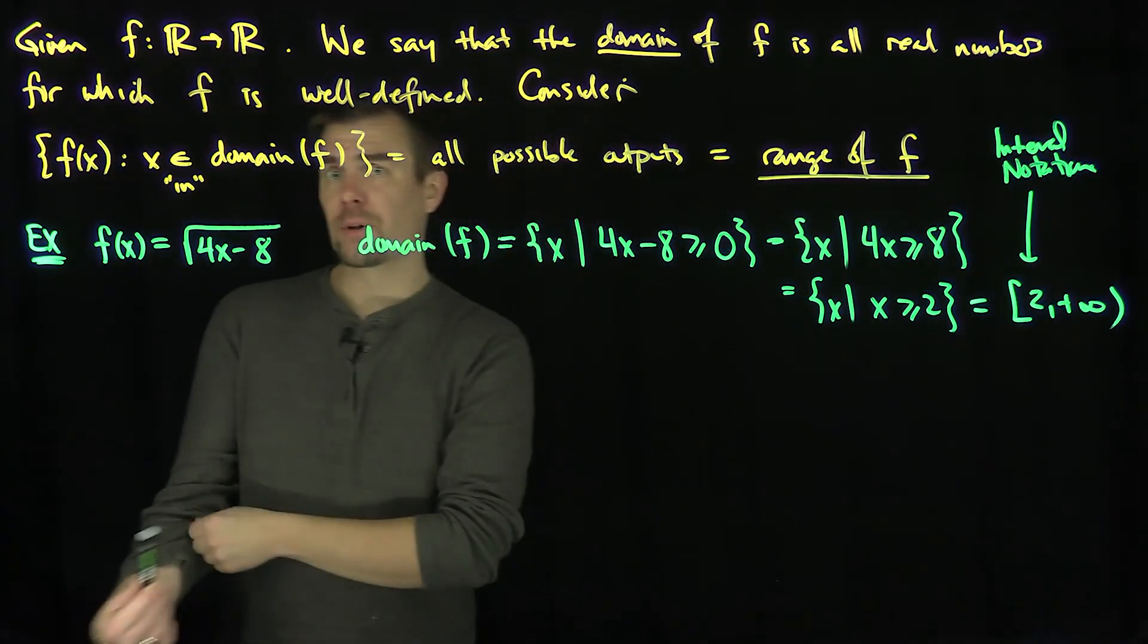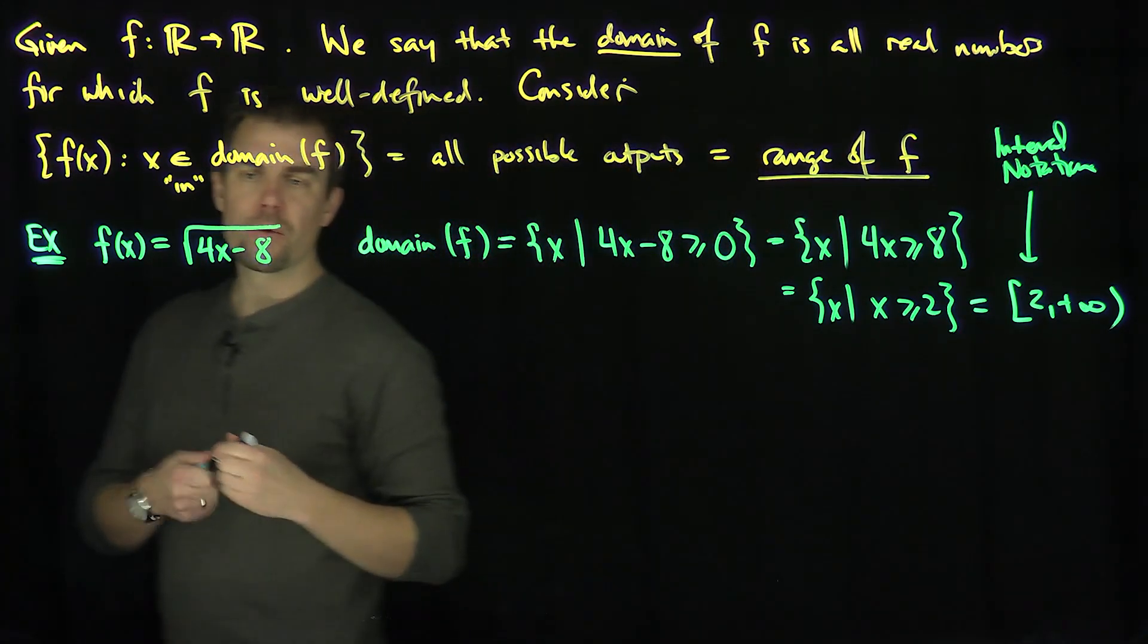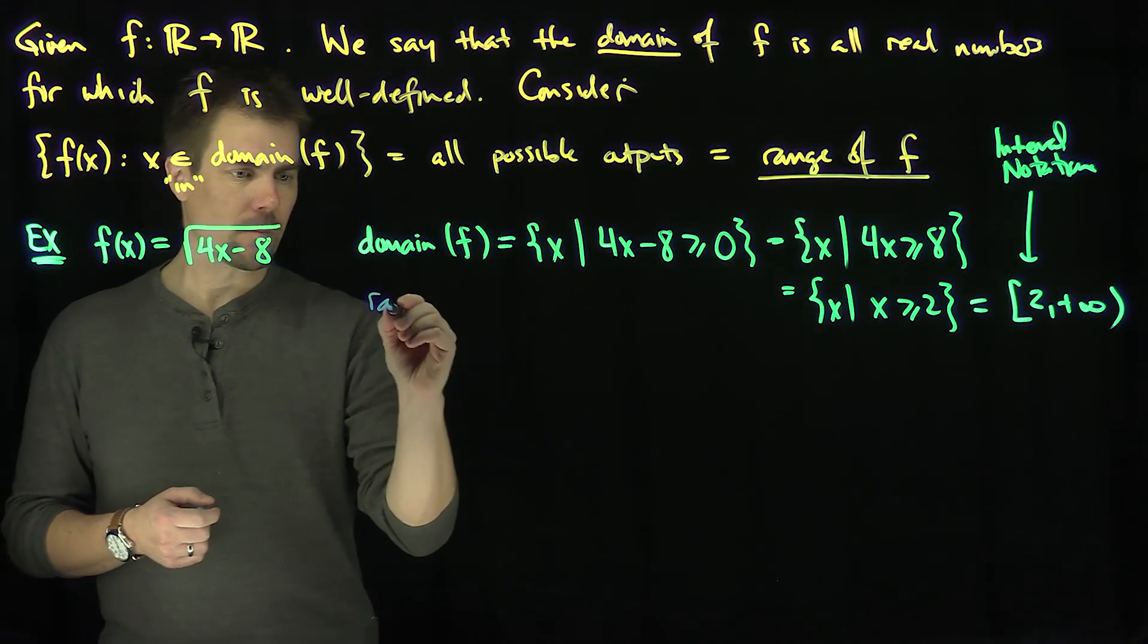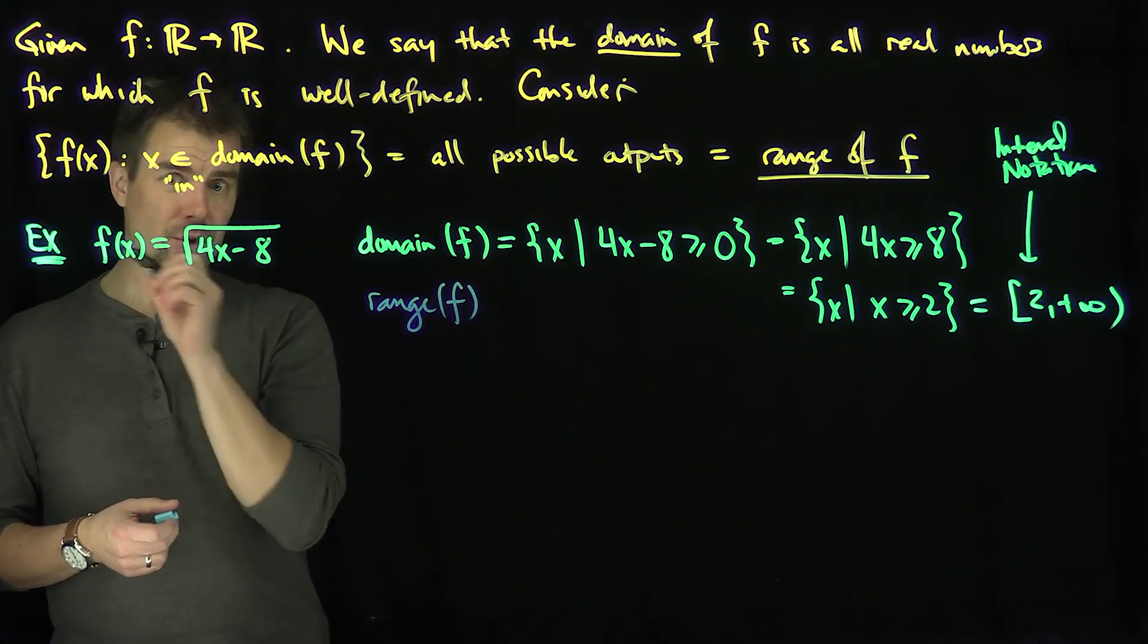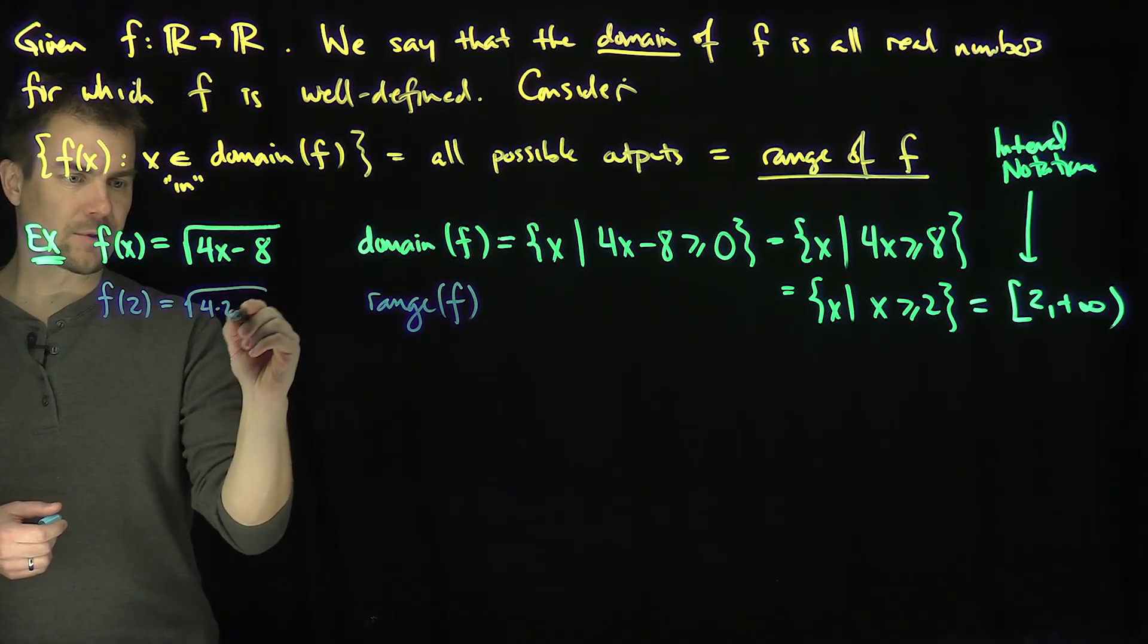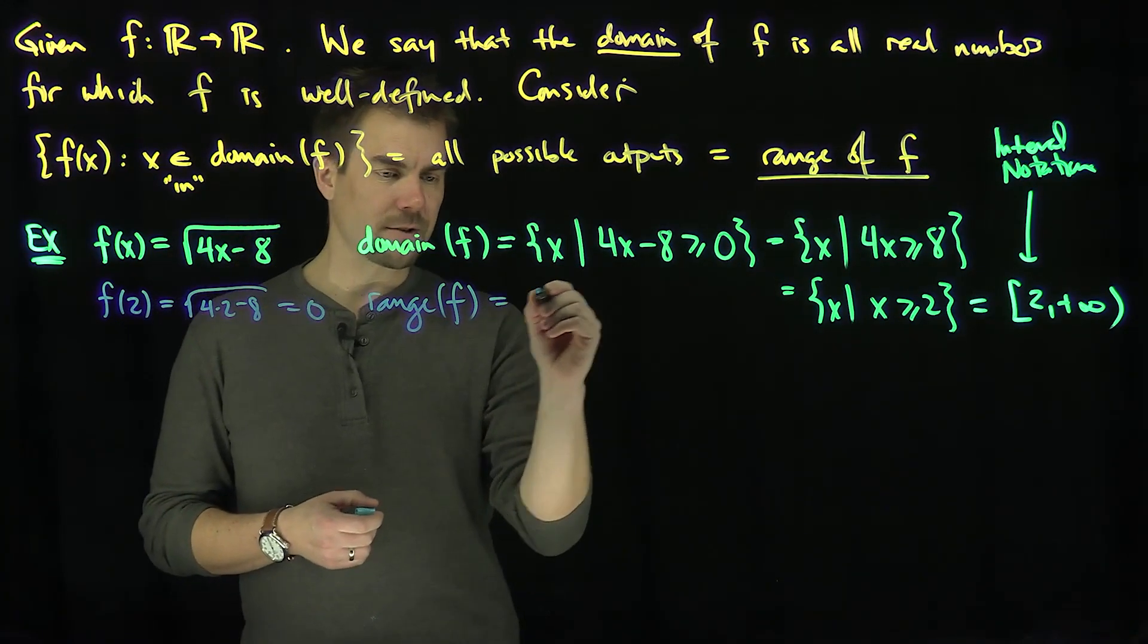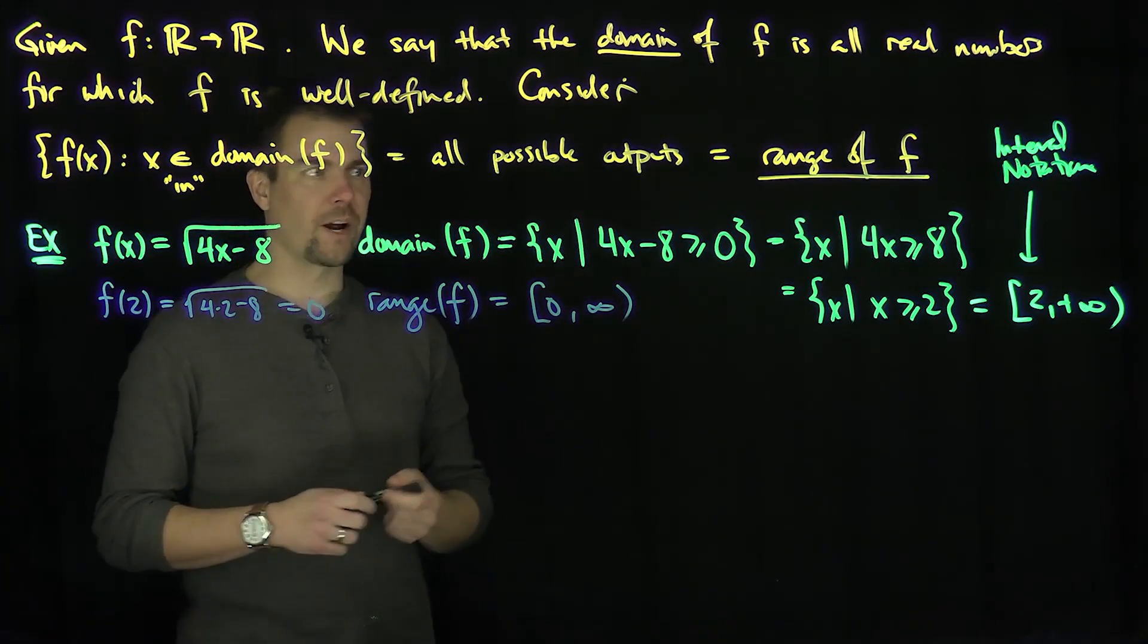And now to find the range, we want to find all the possible output values. So what are the possible output values? Well, for this particular function, we know that the square root outputs only things that are non-negative. So the range of this function f will be... in particular, if I plug in x equals 2, we'll get the square root of 4 times 2 minus 8, which is 0. So I can clearly get to 0. And I can get any number I wish by plugging in the right value for x. So the range of f starts at 0 and goes all the way up to positive infinity.